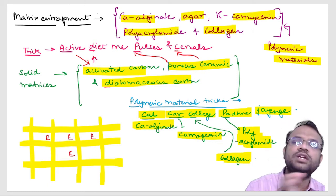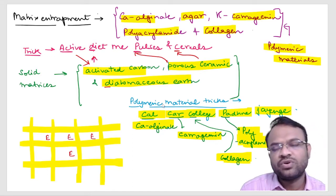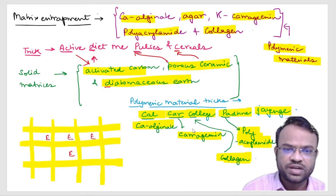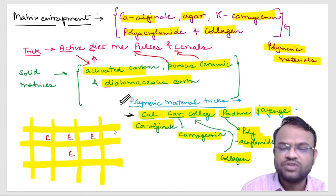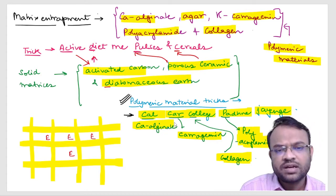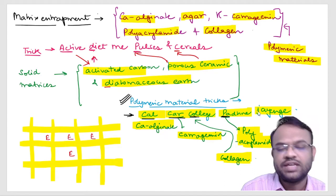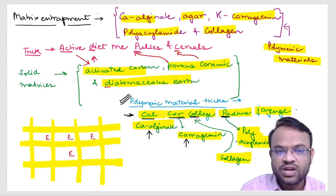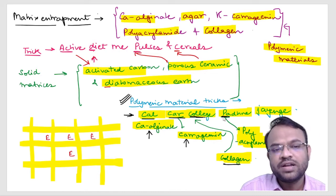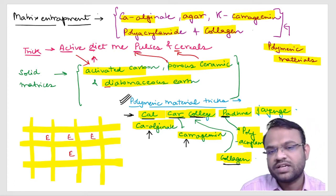These names — calcium alginate, agar, carrageenan, polyacrylamide, and collagen — are commonly asked in examinations. I have made a trick to learn them efficiently. The trick in Hindi goes: 'Cal car se college pardon a' — Cal for calcium alginate, Car for carrageenan, College for collagen, and P for polyacrylamide. This way you can easily remember all the polymeric materials used in matrix entrapment.